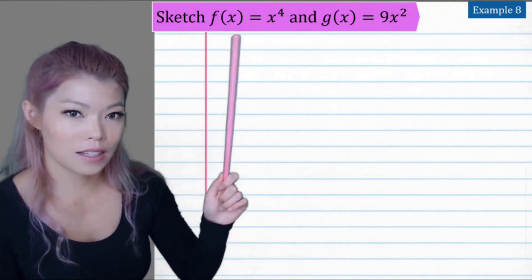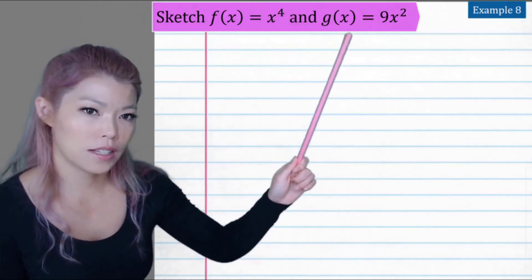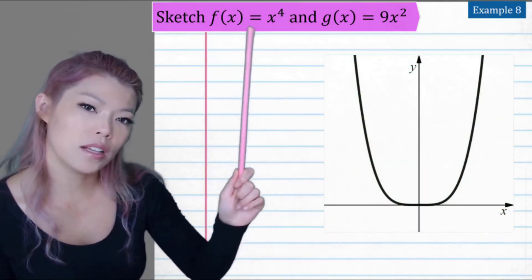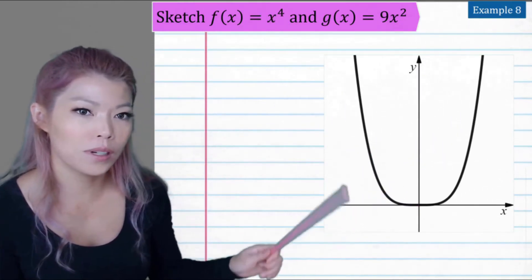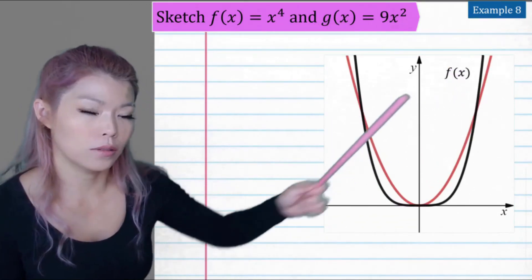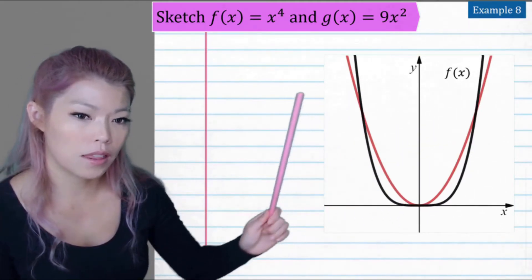Example eight. Sketch f(x) where f(x) is x equals to the power of four, and g(x) equals nine x squared. So let's see what it looks like. We know x to the power of four is the quartic with that flat bottom of a turning point. And g(x) is our normal parabola that looks something like that. We can see from this rough sketch that we need to find the intercepts.